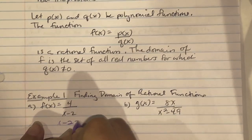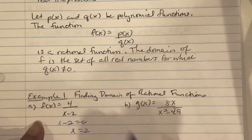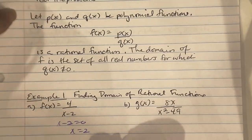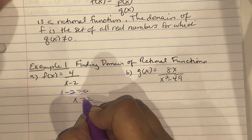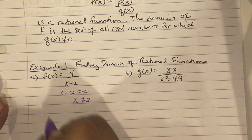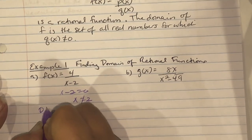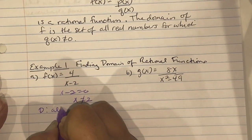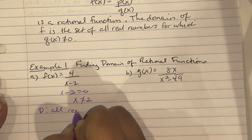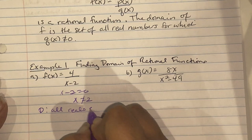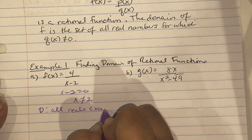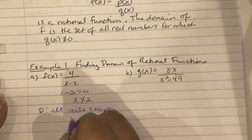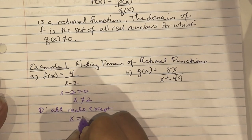That means x can be any number except 2. So the domain is all reals except x equals 2.